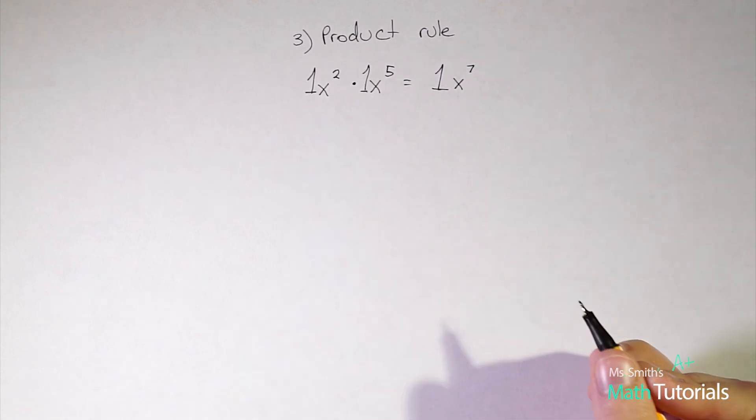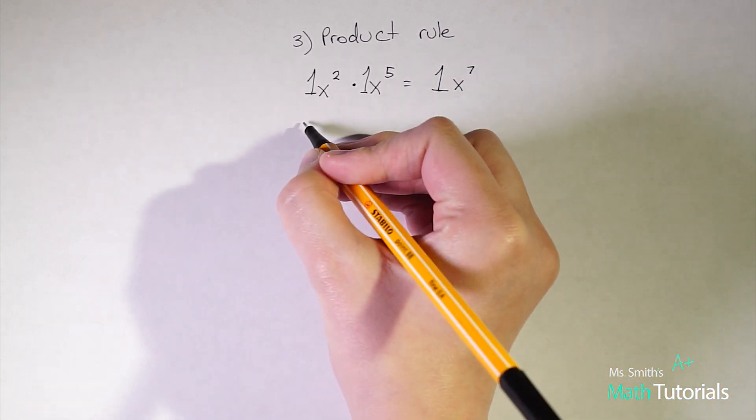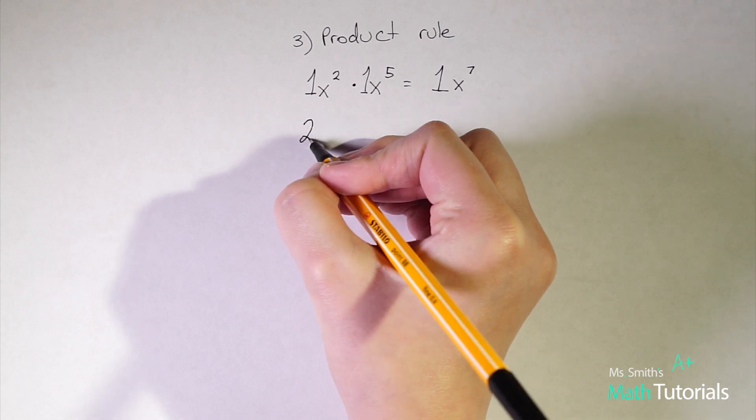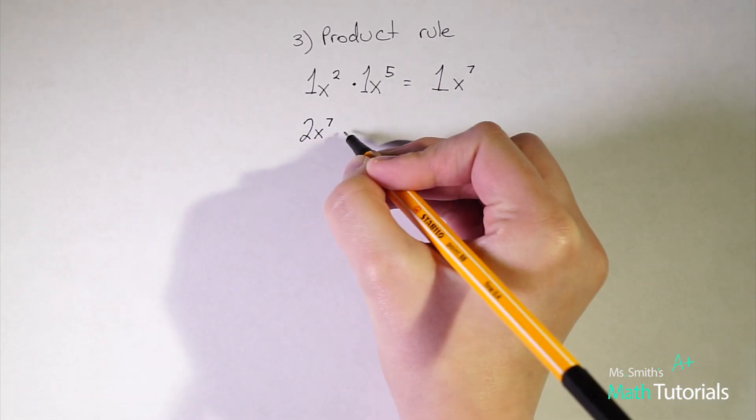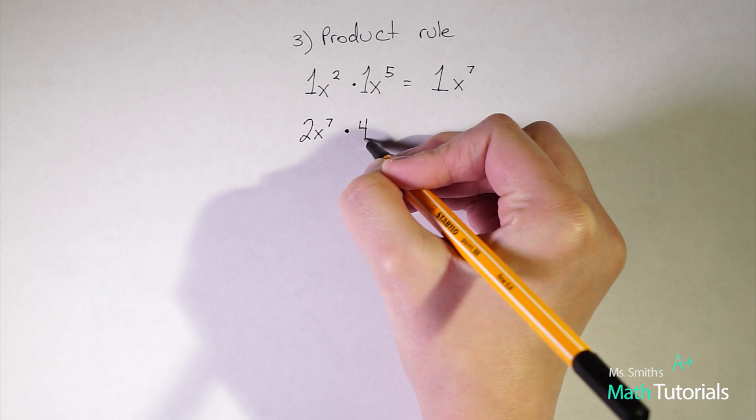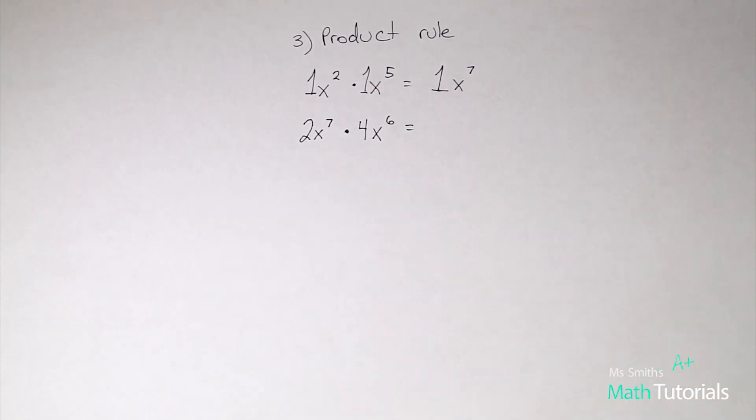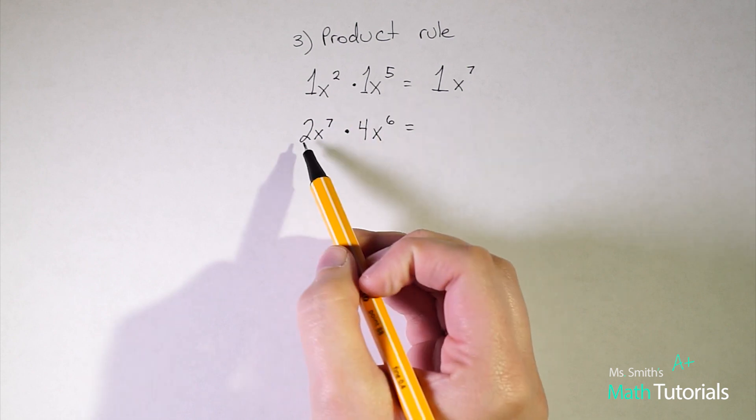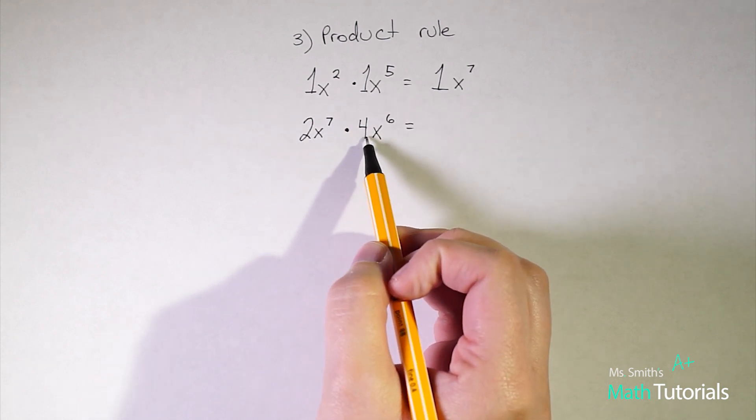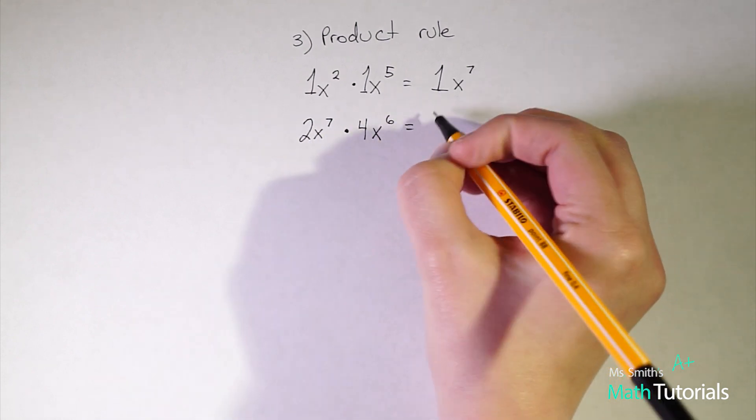This could extend beyond two different whole numbers. So we could have, for example, two x to the seventh being multiplied by four x to the sixth. So we would solve this the same way we did the top one. Our whole number times our whole number, two times four is eight.